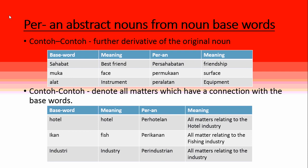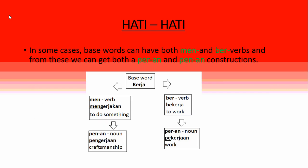For per-an constructions that denote all things connected with the base word, these are easier to spot. For example, hotel becomes perhotela meaning all matters relating to the hotel industry — translatable as 'hospitality industry.' Ikan meaning 'fish' becomes perikanan, meaning all matters relating to the fishing industry, so 'fisheries.'